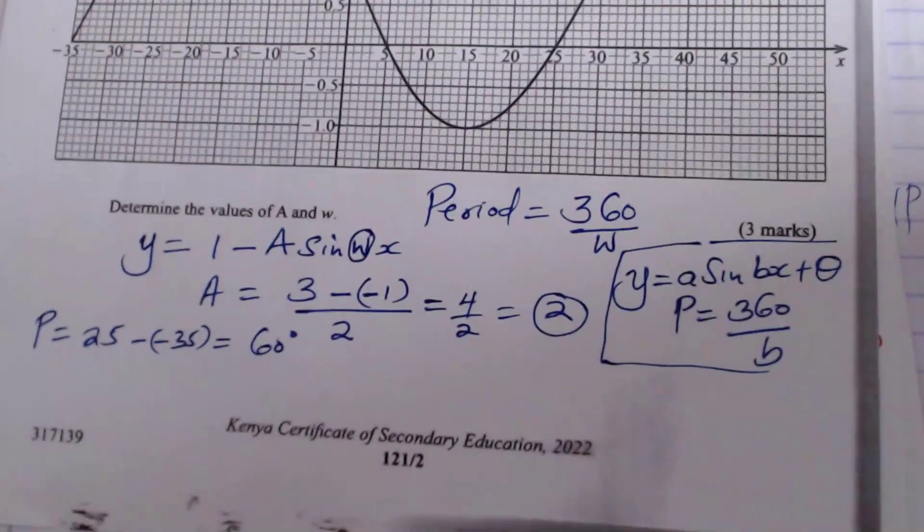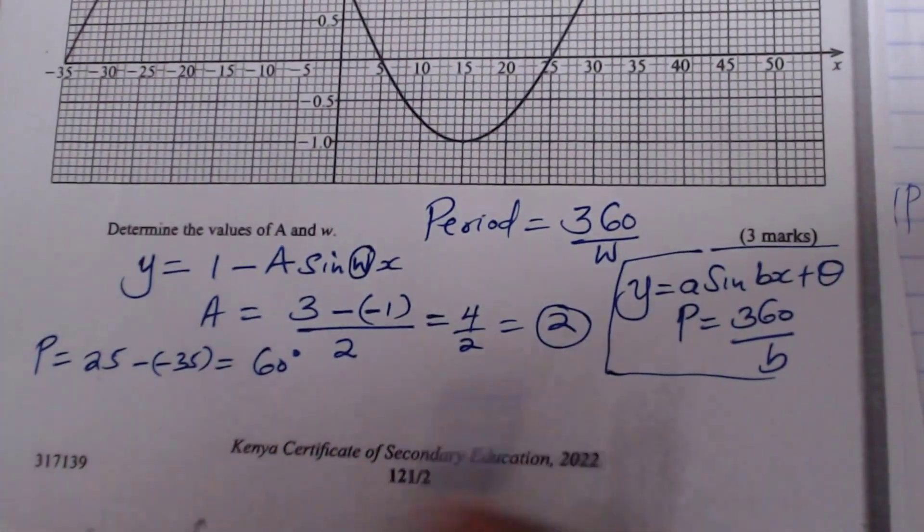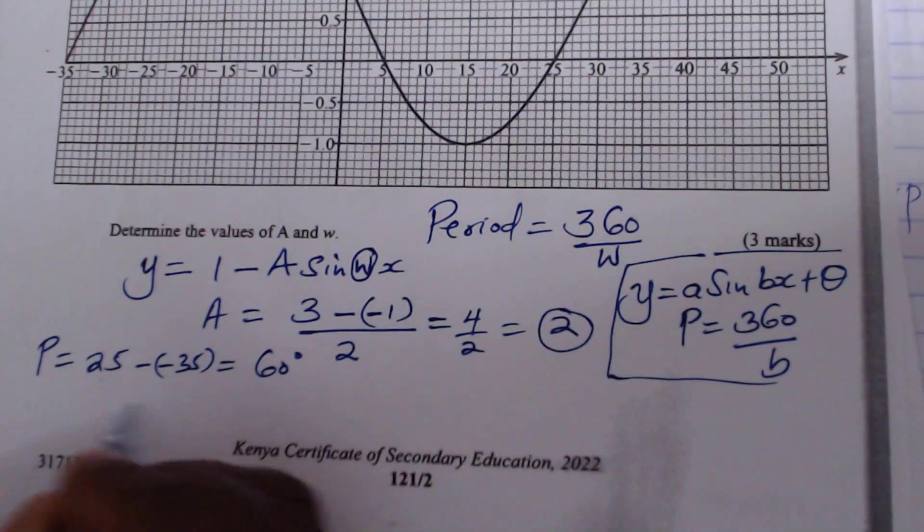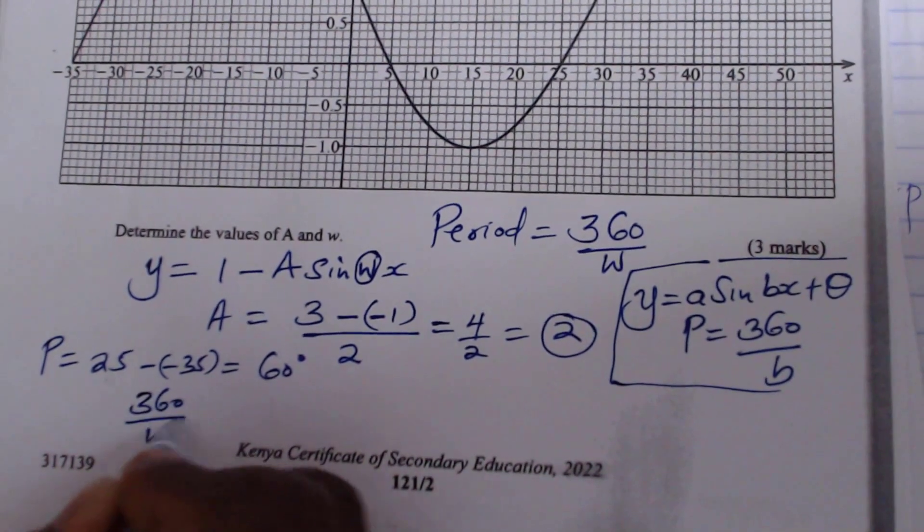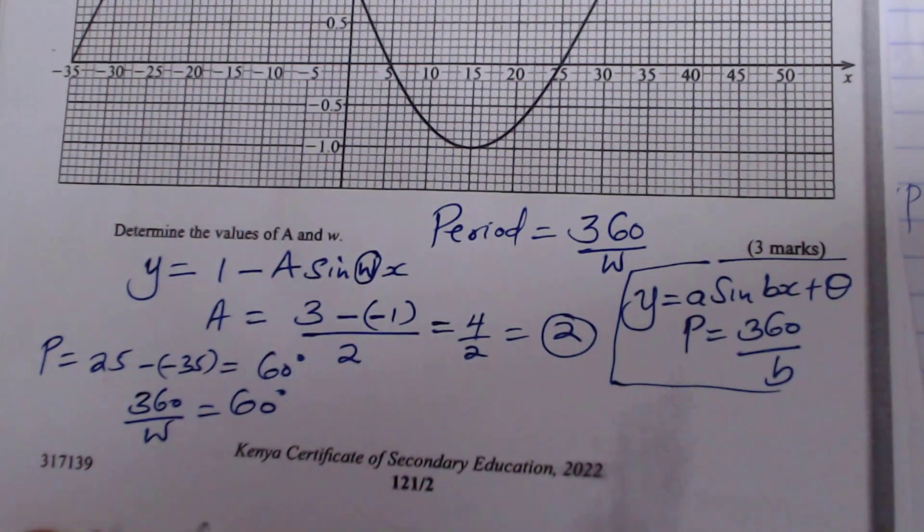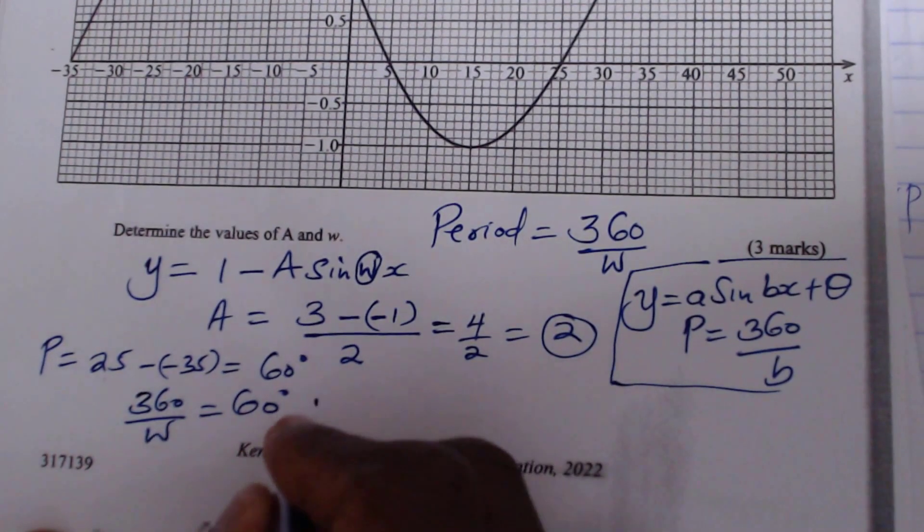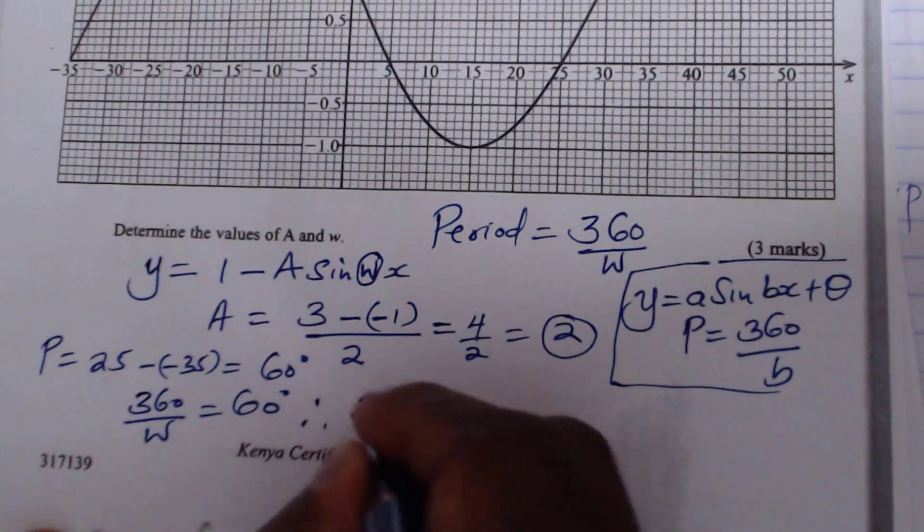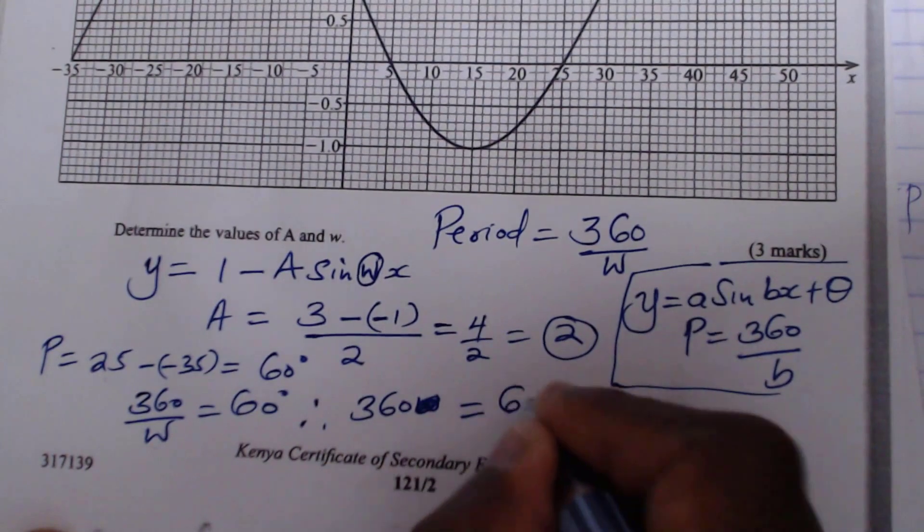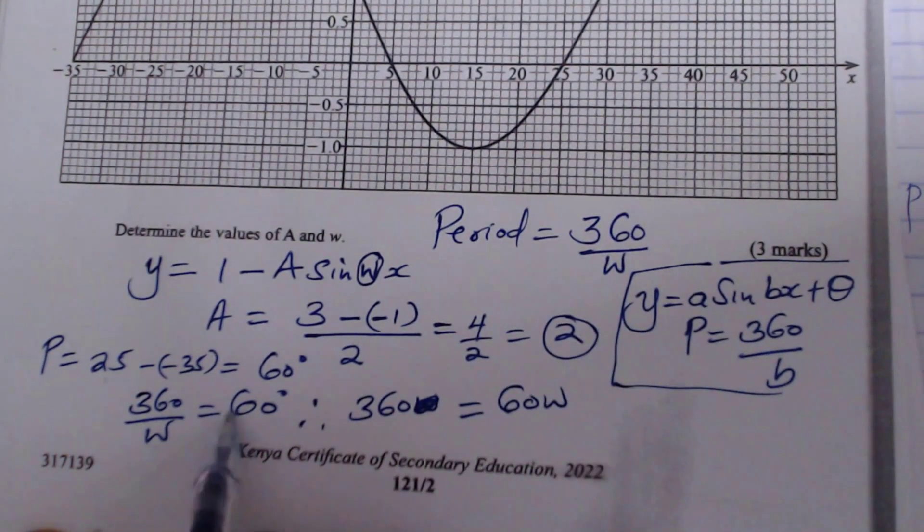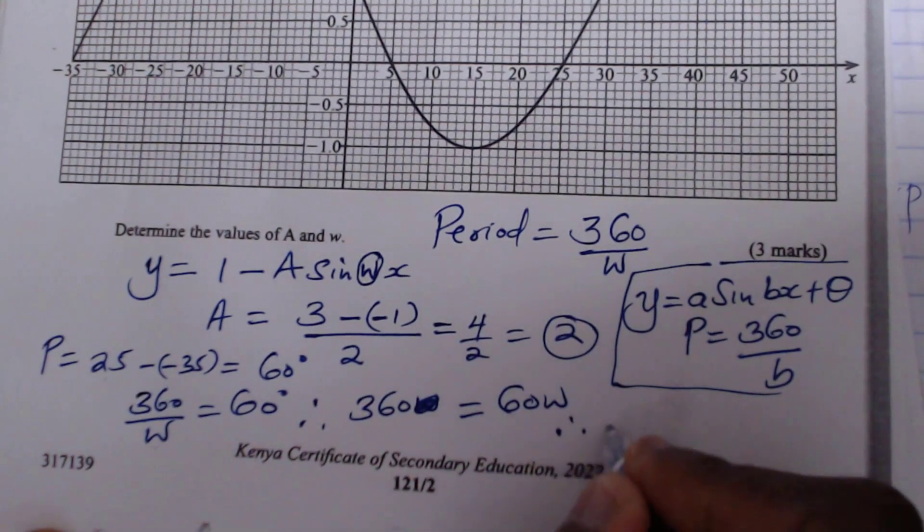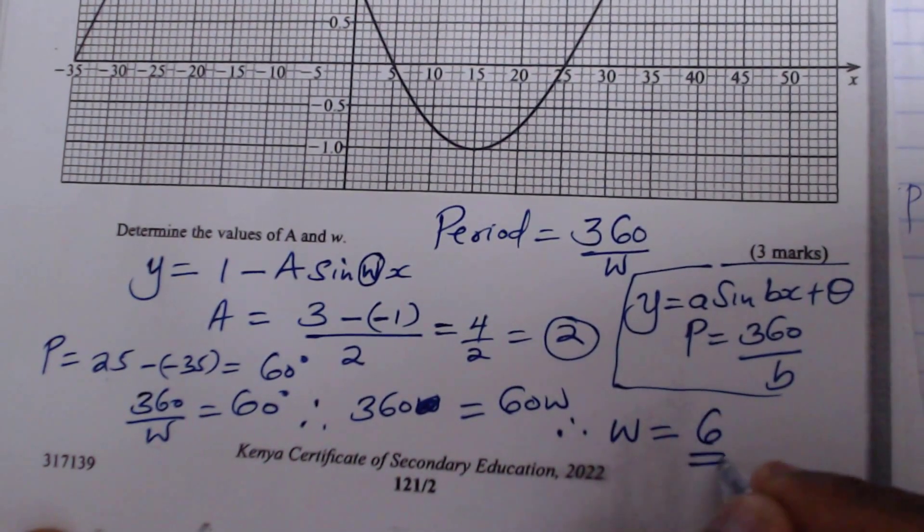So now after getting that, it is possible now to get the value of W. So period is obtained by 360 divided by W equals the period, and the period is 60 degrees. So when you solve this, you'd be able to get W. So this will be 360 equals 60W. Just cross multiply, 360 equals 60W, and W will be given by 6.